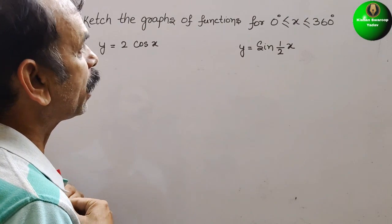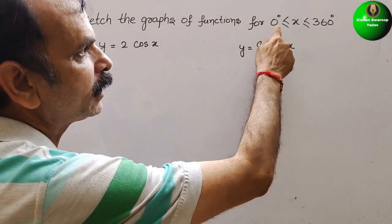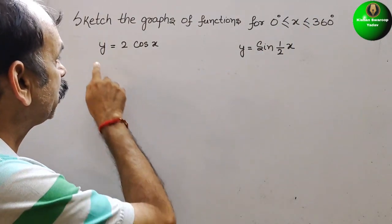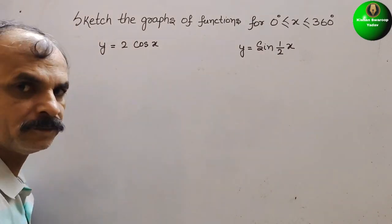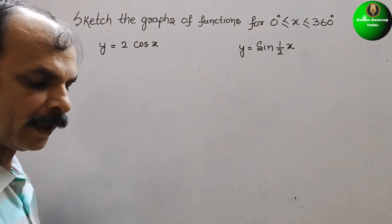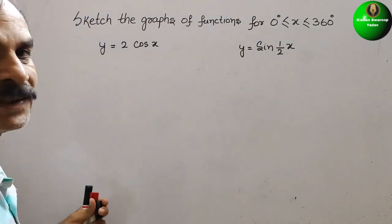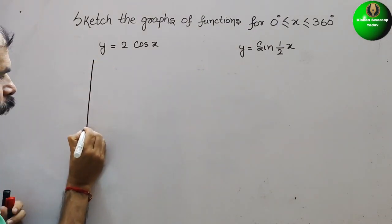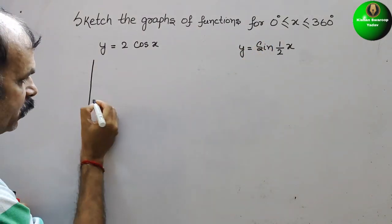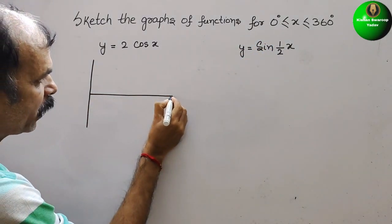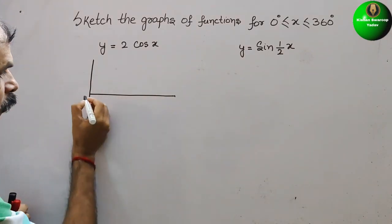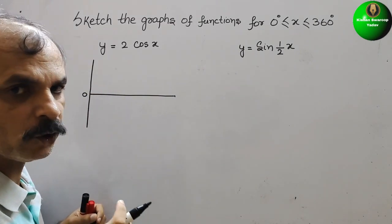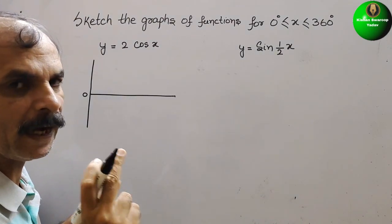Your question is to sketch the graph of functions for 0 degrees less than or equal to x less than or equal to 360 degrees. They have given y is equal to 2 cos x. So here we will make a cos x wave on a graph. They have told 0 to 360, that means on the x-axis we have to go up to 360 degrees. We know that cos is between 1 and minus 1.